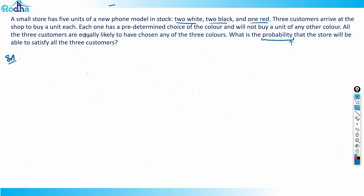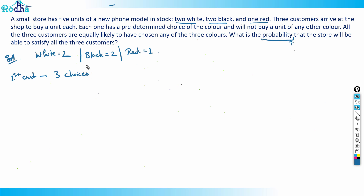The number of white phones is two, the number of black phones is also two, and the number of red phones is one. Now, the first customer will have three choices — white, black, or red. The second customer also has three choices, and the third customer also gets three choices.